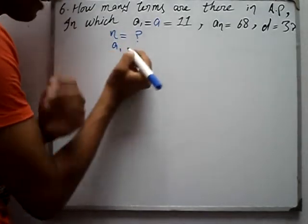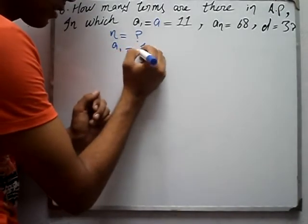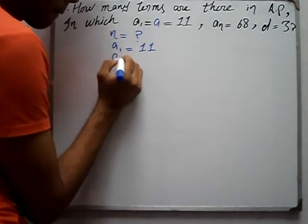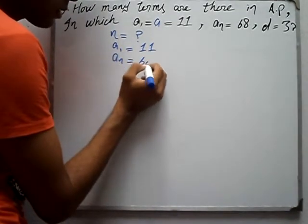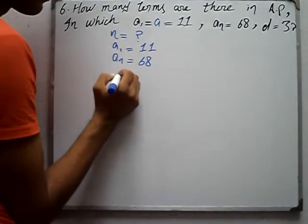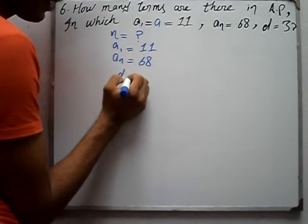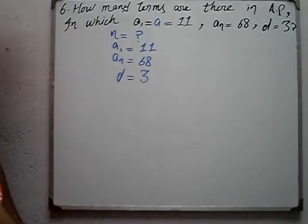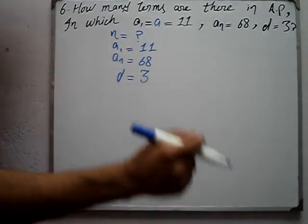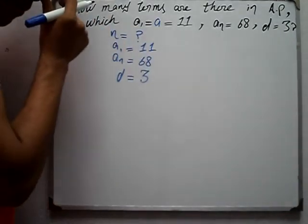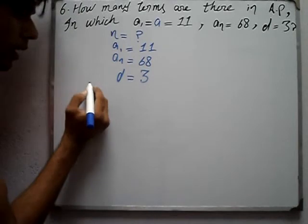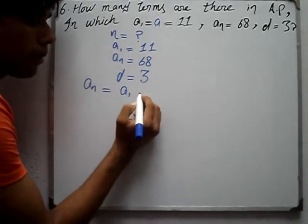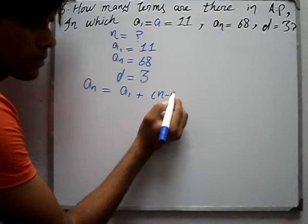A1 is equal to 11, an is equal to 68, d is equal to 3. Using the arithmetic progression formula: an is equal to a1 plus n minus 1 times d.